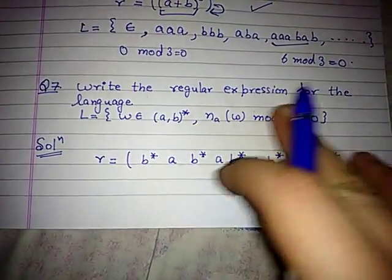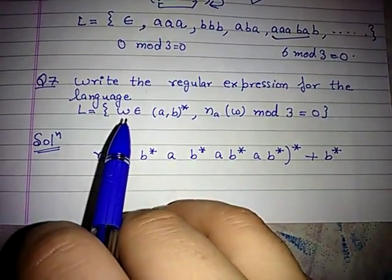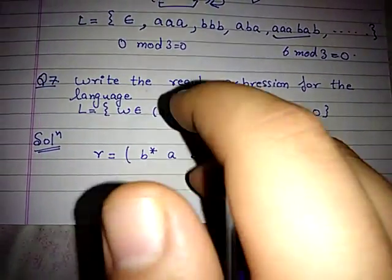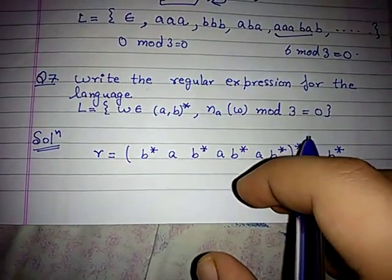Now in this example we have to write the regular expression for the language in which all the strings have number of a's which when divided by 3 gives the remainder 0.